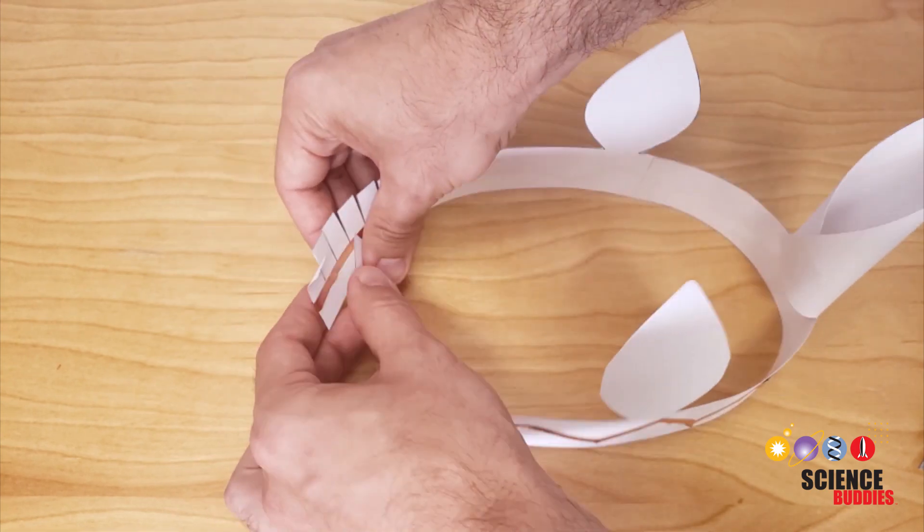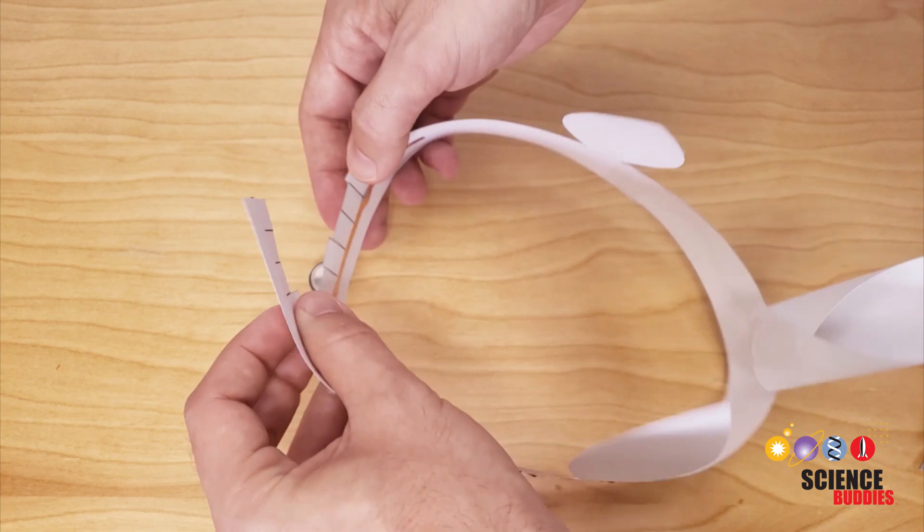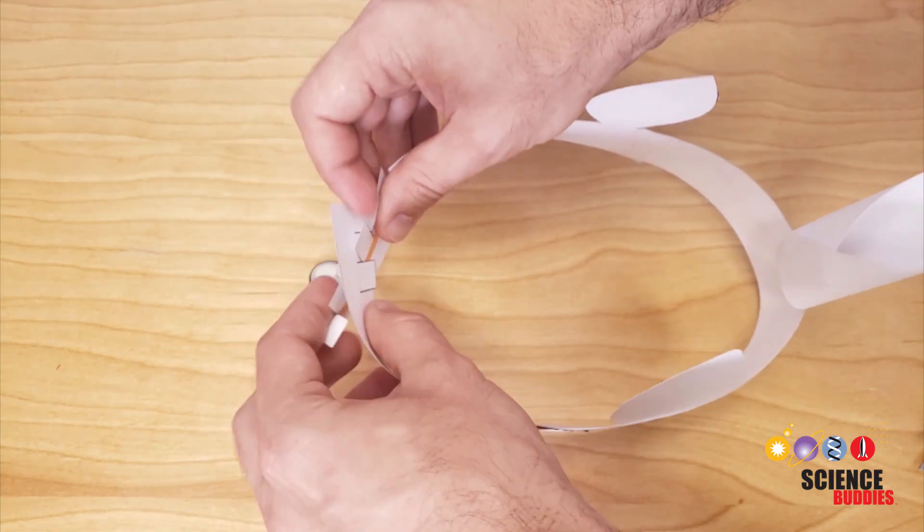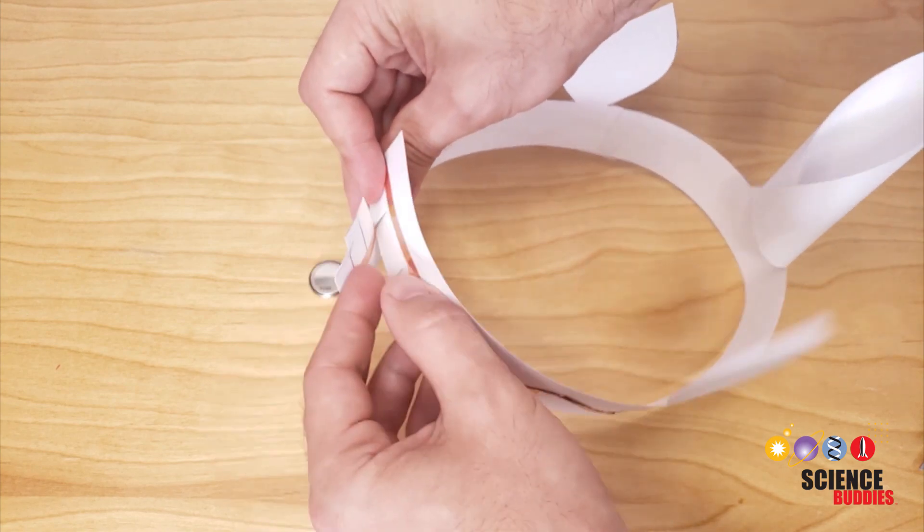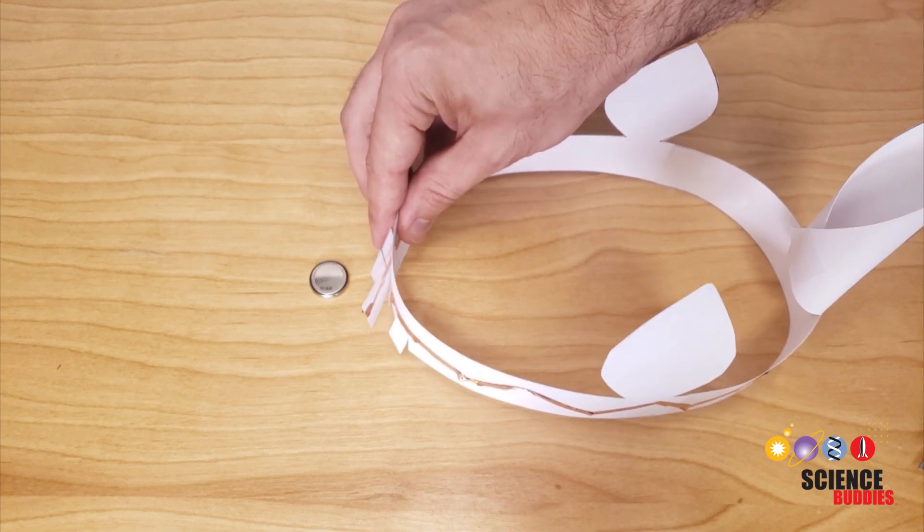So what you can do now is adjust this so it fits on your head. You have these tabs that slide together so you can use them to adjust the headband so it fits on your head by locking the tabs together like that. And then you will have this space where you can put the battery in and secure that with a paper clip so the battery does not fall out when you're wearing the headband.